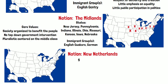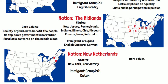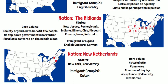The next nation is New Netherlands. This was settled by Dutch immigrants. The states include New York and New Jersey. The core values include being materialistic, belief in commerce, freedom of inquiry, and acceptance of diversity, both ethnic and religious.